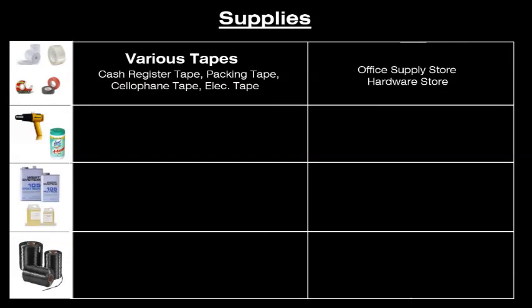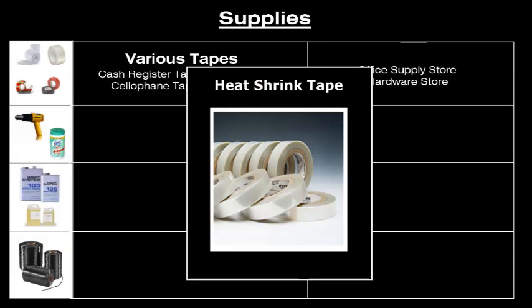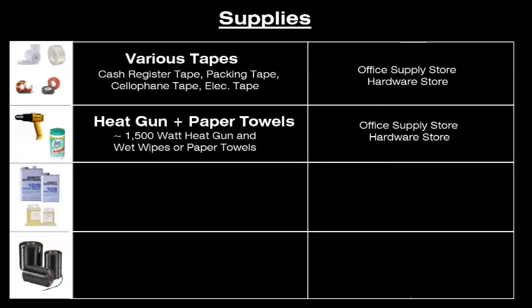Before you start winding, you'll want to have on hand various tapes including cellophane, electrical, and packing tape. If you are doing a pre-wrap over a removable mandrel, you'll want cash register tape — basically two-inch wide light bond paper on a roll from any office supply store. Heat shrink tape can be used in the final curing process to compress the winding layers and squeeze out any excess glue. Make sure you don't confuse heat shrink tape with heat shrink tubing — they're not the same. A heat gun for the heated curing process, and paper towels or sanitary wipes for cleanup, which can take less than three minutes.